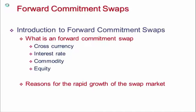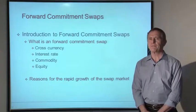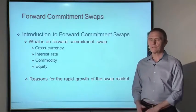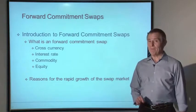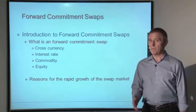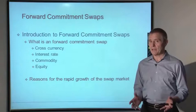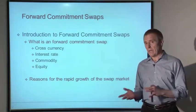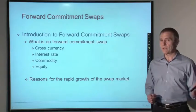Interest rate swaps fall into a category known as forward commitment swaps. To place things in context, there are only two broad categories of derivatives: forward commitment contracts and contingent claims. Interest rate swaps fall into the first category. The emphasis is on the word 'commitment' because in all forward commitment derivatives — whether swaps, futures, or forward contracts — both counterparties are entering into a legal obligation. In a plain vanilla interest rate swap, one party commits to pay a floating rate, the other commits to pay a fixed rate.